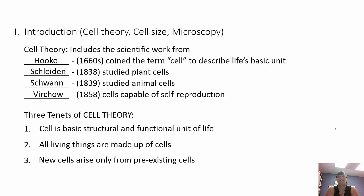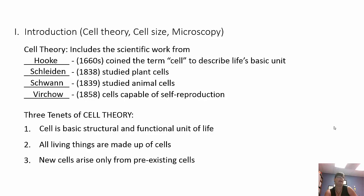Cell theory is a combination of work from different scientists. In the 1660s, Hooke coined the term 'cell' to describe life's basic unit. Then Schleiden in 1838 studied plant cells. Schwann in 1839 studied animal cells. And in 1858, Virchow did experiments showing that cells are capable of self-reproduction.